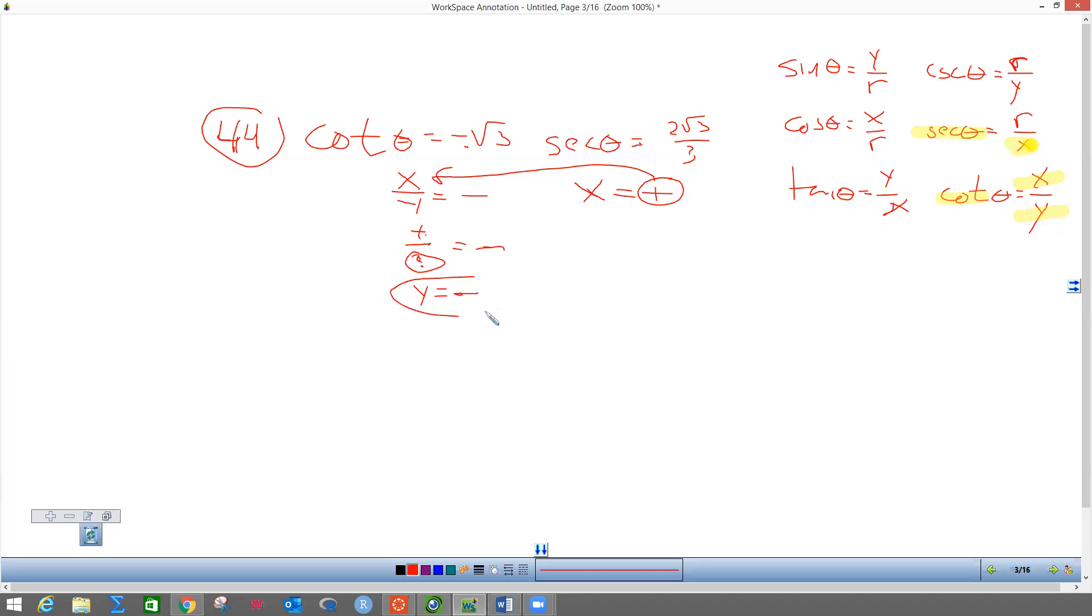Because this says X is positive and Y is negative, I know that this triangle is in the fourth quadrant. In the fourth quadrant, X is positive and Y is negative. I get that from this.